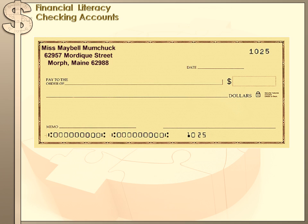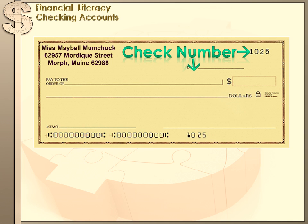Now there are a couple of things you need to understand when you look at a check. There are certain numbers on this check that may not mean anything to you, but I'm going to explain them to you. The first is the check number. Each of your checks is going to be sequentially ordered. The next check in this series would be 1026, and the one before it would be 1024. That check number is also typically listed on the bottom of the check, so that lets you keep track of what check you're looking at and also find it in your check register.